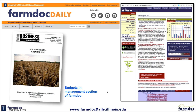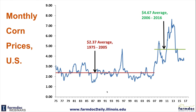We're going to look at grain farm income for this coming year and put that against the backdrop of prices. Looking at corn prices in the United States — these are monthly corn prices — we had a relatively long period from 1975 through 2007 when corn prices varied around $2.40, $2.37 the actual average. Sometimes we were well above it, like in 1995. Sometimes we were well below it, like in 1997 through 2003.